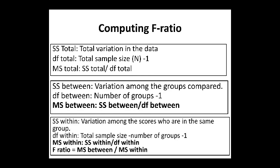Computing the F-ratio: First, compute the sum of squares total — the total variation in the data — with degree of freedom equal to total sample size N minus 1. Mean sum of squares total equals sum of squares total divided by the total degree of freedom. Then calculate the sum of squares between, which is the variation among the groups compared. Degree of freedom for between is the number of groups minus 1. For 3 groups, that is 3 minus 1 equals 2. Mean sum of squares between equals sum of squares between divided by degree of freedom between.